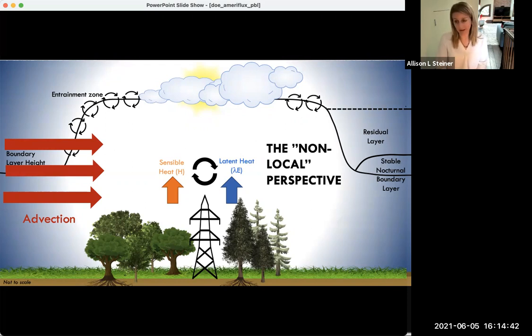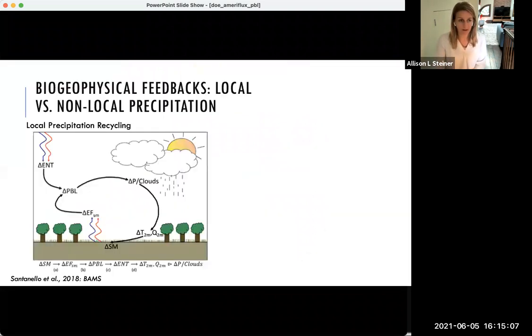One unique example of this is the role of low-level jets. In the U.S. in the nighttime in the southern Great Plains, there is a strong nocturnal jet that goes right along the top of this region and can generate a lot of mixing, and is also very important for moisture advection into the central Great Plains.